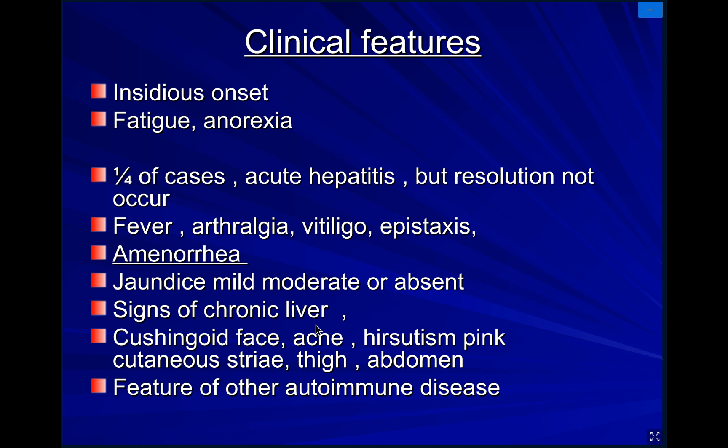Acne is also one of the manifestations. Hirsutism is present. There is pink cutaneous striae seen on the upper abdomen and upper part of thigh. It is pink, and this is different from the striae which occur after pregnancy, which will be pale. Because of autoimmune disease, steroids, and the cushingoid condition, it will be pink.